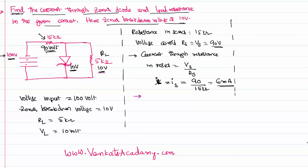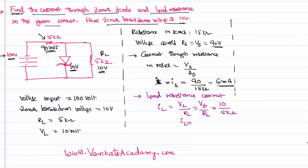Now let's calculate the current through the load resistance. IL can be written as VL divided by RL — voltage across the load resistance divided by the resistance of the load resistance. VL equals VZ because the Zener diode is in parallel to the load resistance, and the Zener breakdown voltage is 10 volts. The resistance of the load resistance is 5 kilo ohms. So the current across the load resistance is 10 divided by 5 kilo ohms, which equals 2 milli amperes.